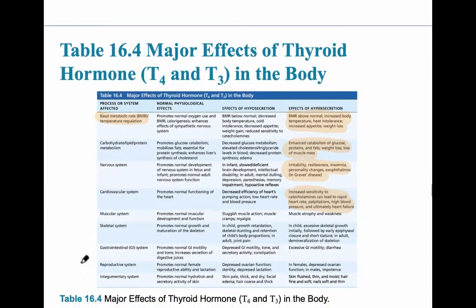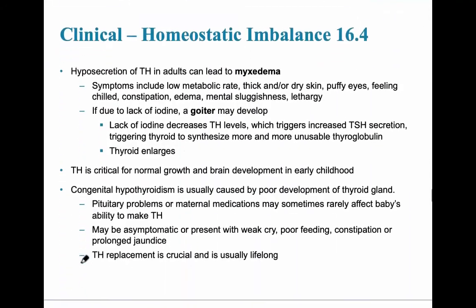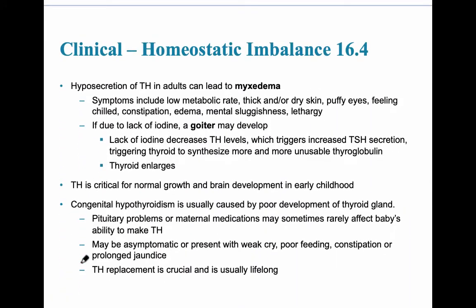The next slide shows a homeostatic imbalance as an example of what we just discussed. Hyposecretion — hypothyroidism in adults — leads to myxedema. Symptoms include a low basal metabolic rate, puffy eyes, feeling chilled, constipation, and edema. If it is due to a lack of iodine, a goiter may develop.